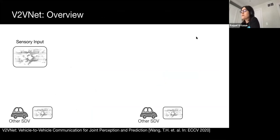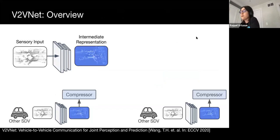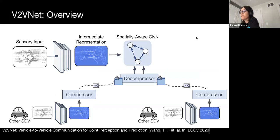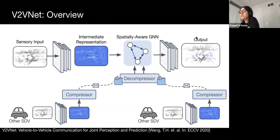We propose V2VNet, the first sophisticated AI-based V2V approach, which aggregates intermediate features with a graph neural network. First, sensory inputs are encoded into a compact representation, which is then compressed and broadcast to other vehicles. Messages from other vehicles are received, decompressed, and all features are aggregated with a spatially-aware graph neural network. Finally, the aggregated features are processed to generate PMP outputs. The key component of our method is the spatially-aware GNN, which intelligently combines observations from multiple views seen at different points in time.